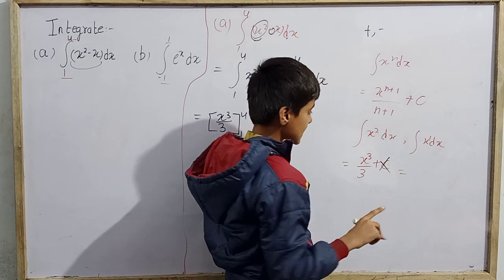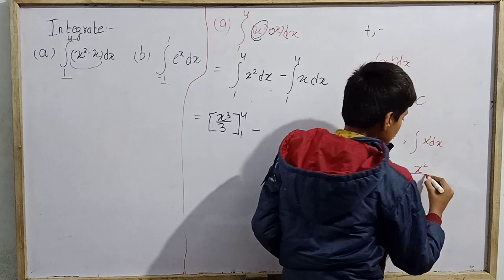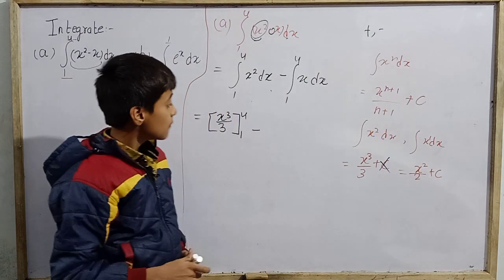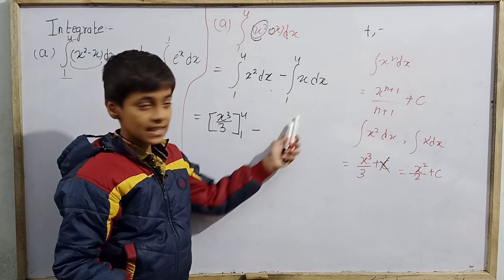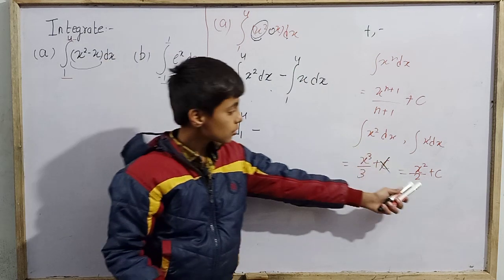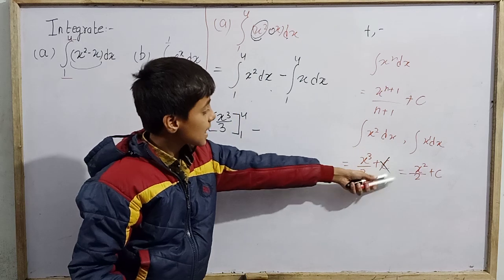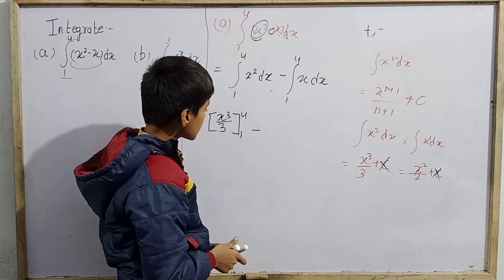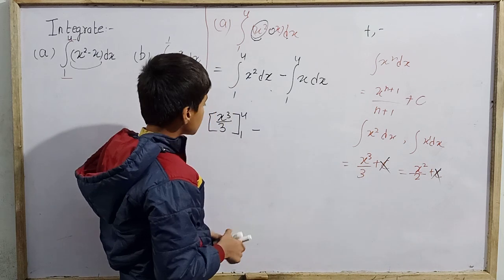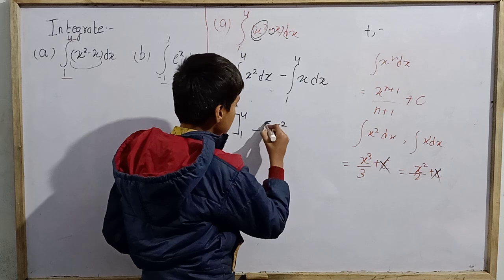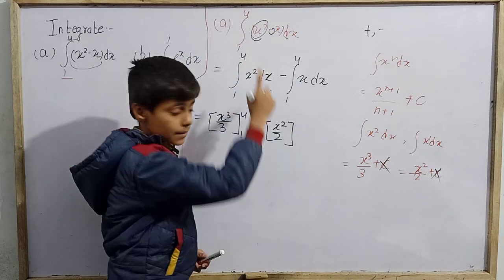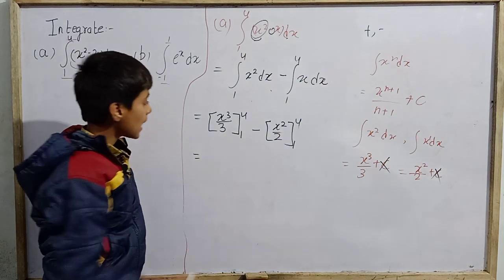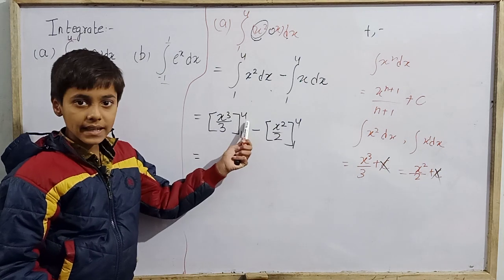Putting in limits: x = 4 gives 4³/3 minus x = 1 gives 1³/3. For the second term, x = 4 gives 4²/2 minus x = 1 gives 1²/2. Now we substitute the values.